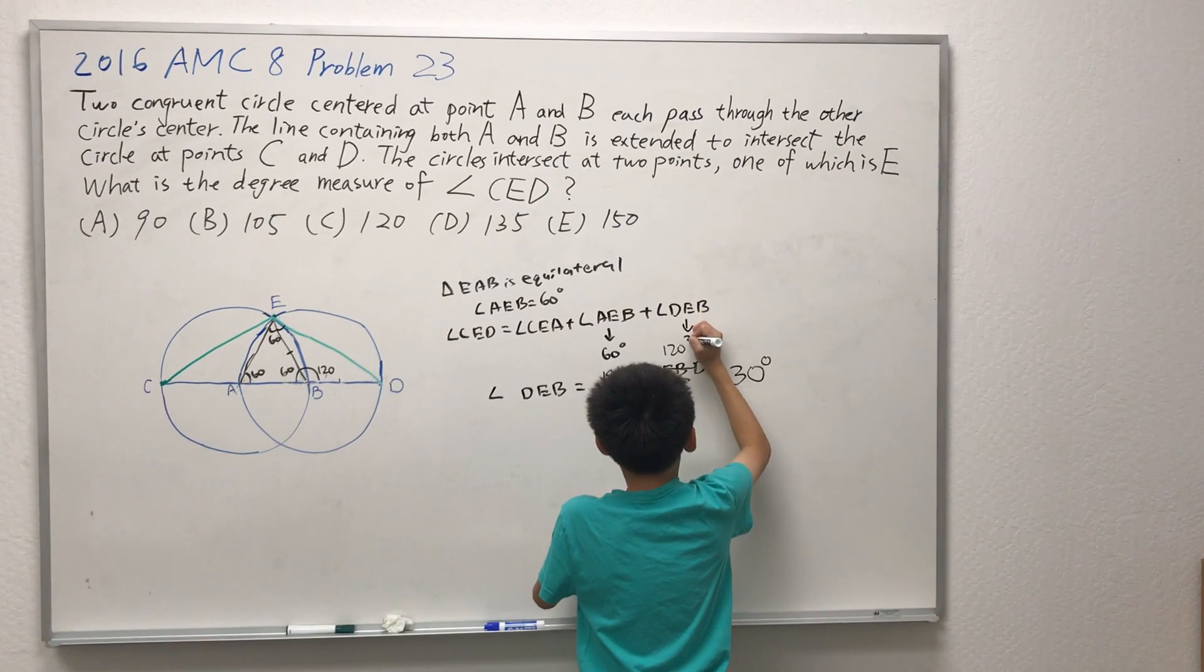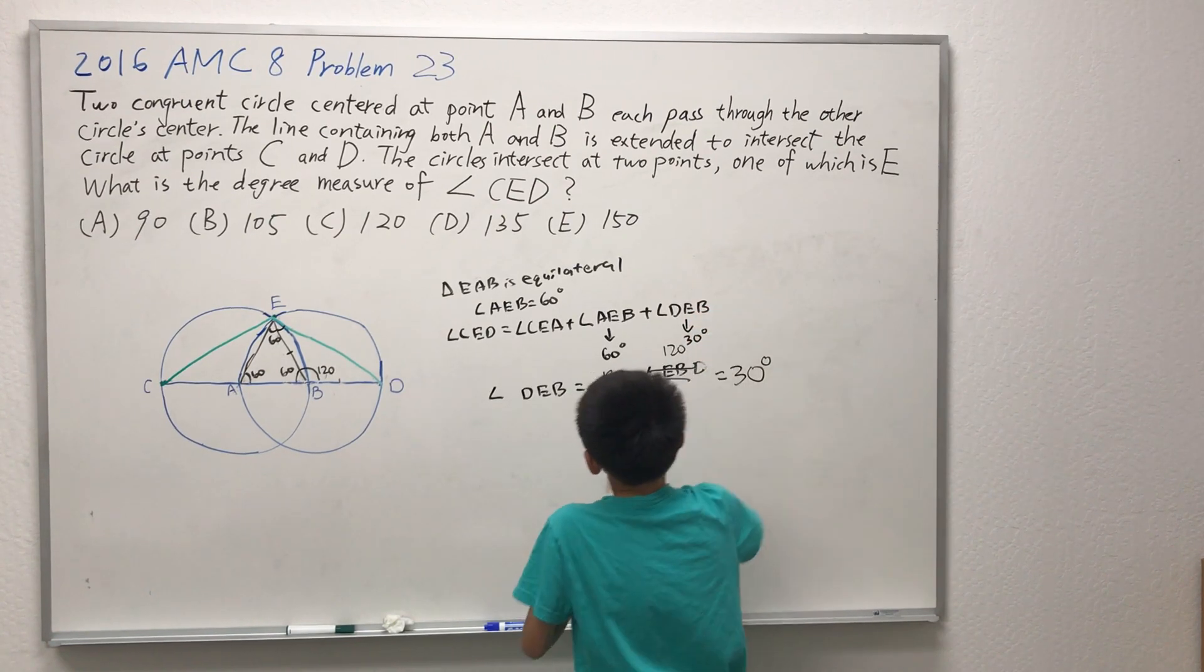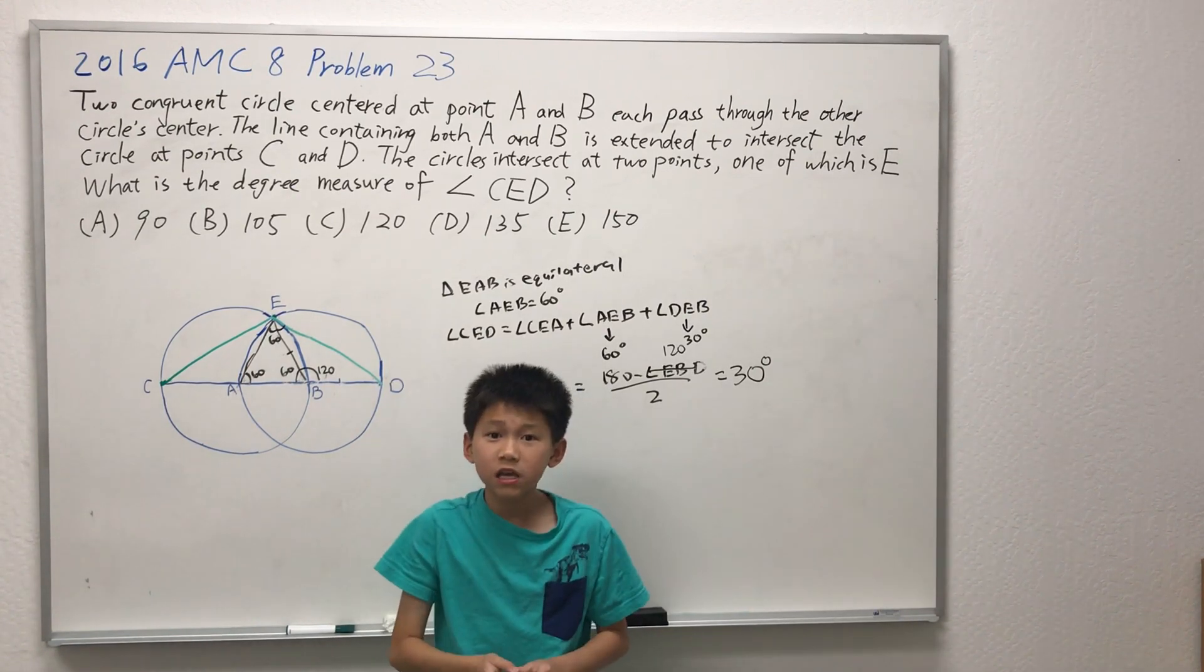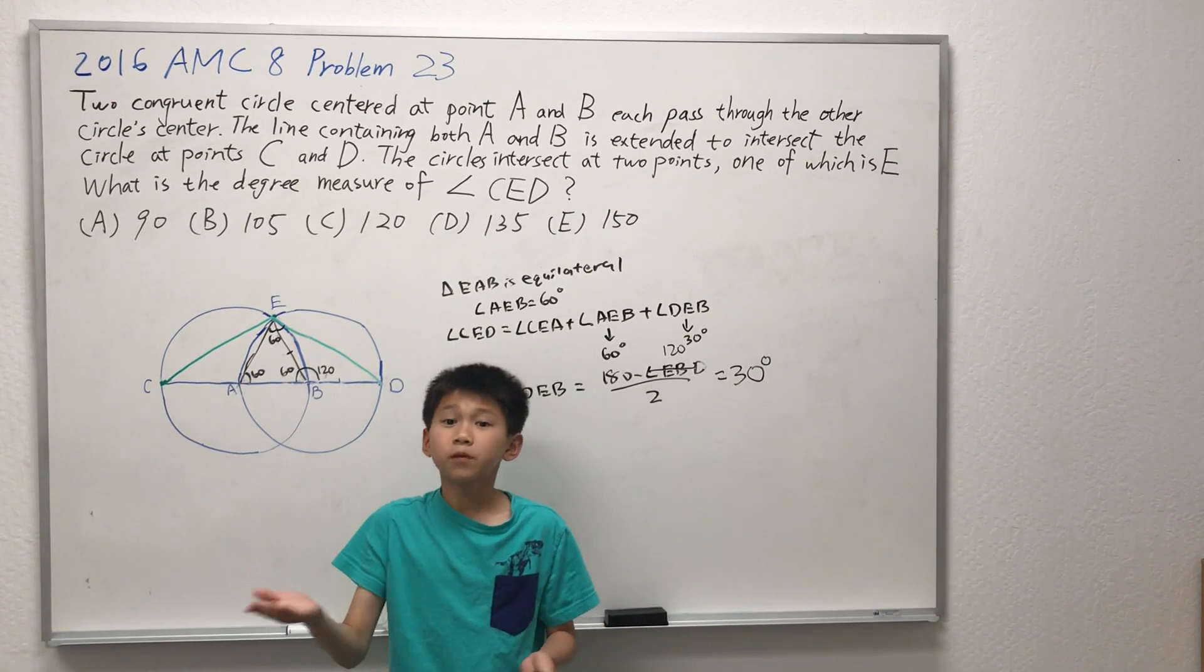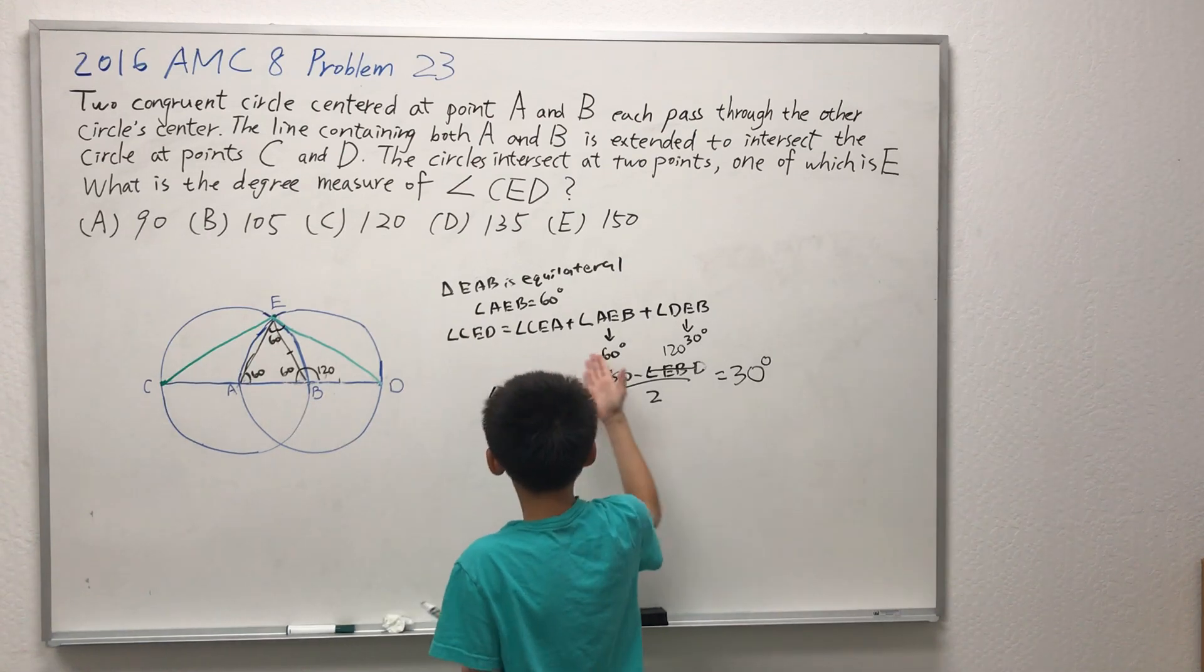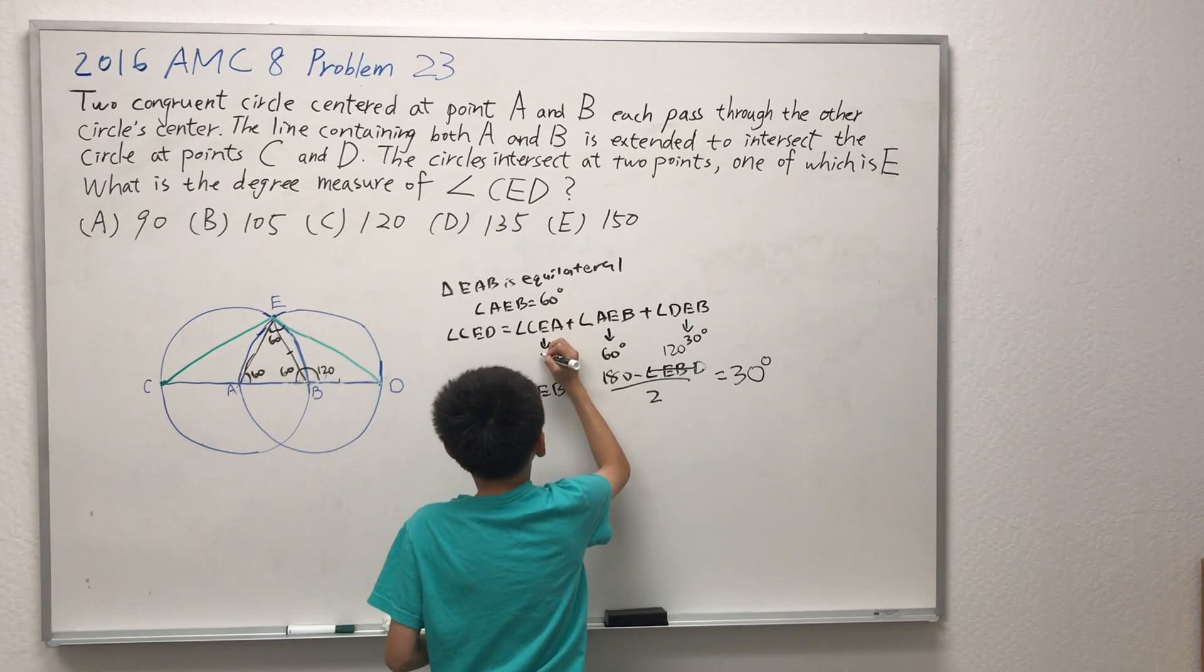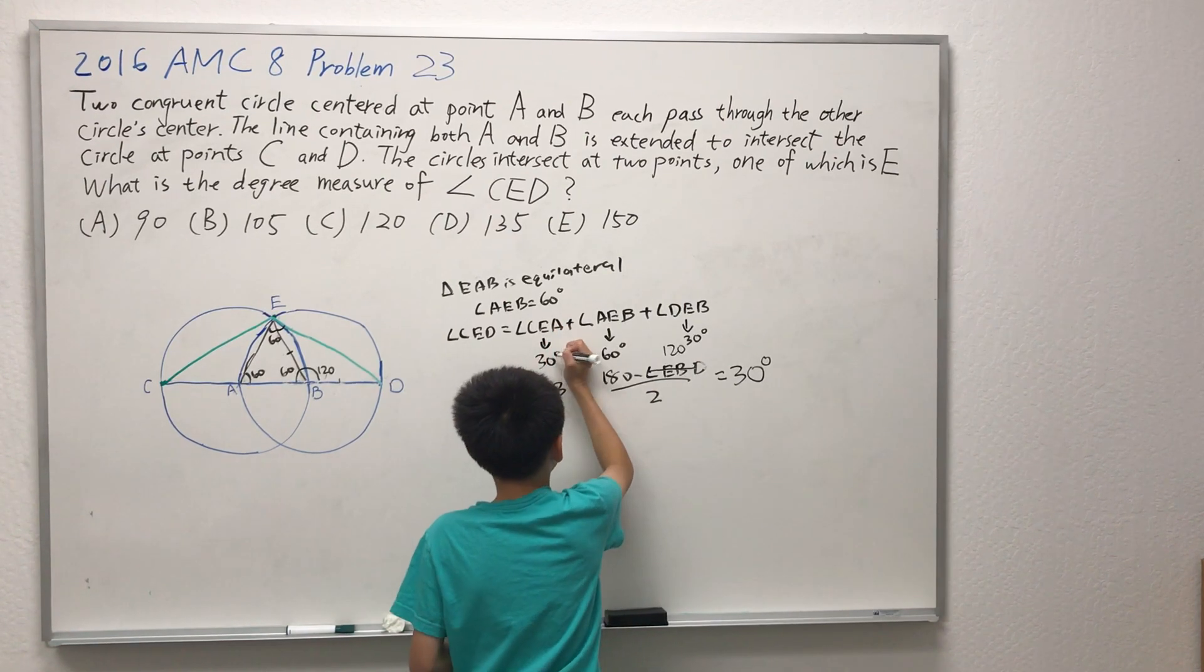So angle DEB is 30 degrees. And since, by symmetry, angle CEA and angle DEB are the same, if you don't believe me, you can perform the same algorithm on this side of the triangle, and you'll get the same answer. So angle CEA is also equal to 30 degrees.